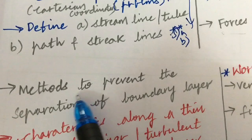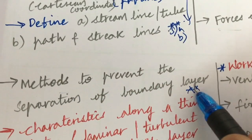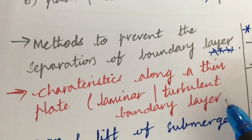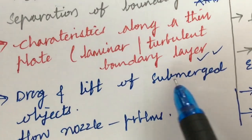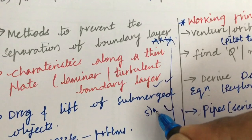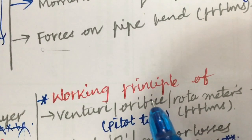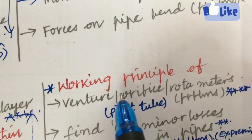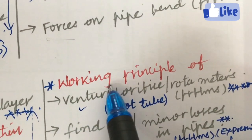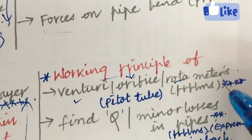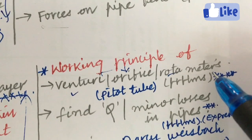The 5th and 6th questions are all about the methods to prevent separation of the boundary layer — also one of the very important gunshot questions. The characteristics along a thin plate related to laminar and turbulent boundary layers, drag and lift of submerged objects, and flow nozzles are also expected as questions 5A and 5B. The working principle of Venturi meter, orifice meter, and rotameter, along with related problems, is also a very important gunshot question. If you work these out, they are quite easy — and for rotameter especially, try to write answers in points rather than paragraphs, and carry a pencil to draw diagrams.